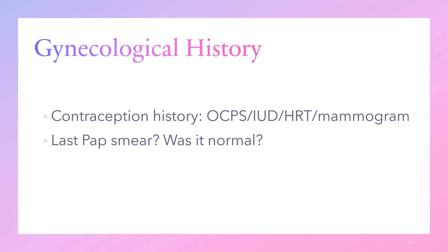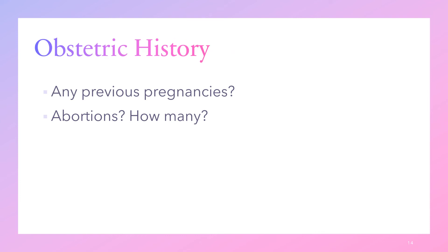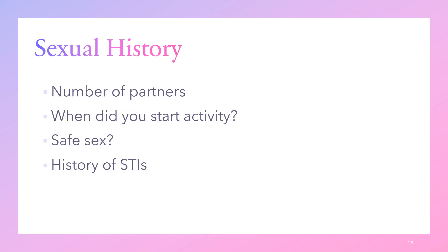Then go to the gynecological history. Is this patient on any form of contraception such as oral contraceptive pills, intrauterine device, or hormone replacement therapy in the past? Has she ever had a mammogram, and when was her last pap smear — was it normal? The obstetric history could also play a role: previous pregnancies, abortions, and how many. For the sexual history, you want to know how many partners the patient has had in the last six months to one year, when she commenced sexual activity, whether she practices safe sex, and whether there is any history of sexually transmitted infections.